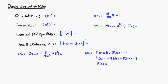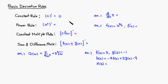Let's look at the basic derivative rules. First one: the constant rule. If you take the derivative of a constant, the derivative is always 0. The reason is if you sketch the graph of a constant function, it's going to be a horizontal line, and the derivative tells you about the slope of the tangent line, but a horizontal line has slope 0. So that's why the derivative of a constant is 0.